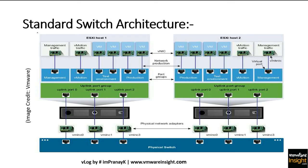Looking at the standard switch architecture: we have physical networking with physical switches connected to the VM NICs on the ESXi host, which connect to L2/L3 switches. On top of the ESXi host we create virtual machines with VNICs. We have different VLANs — management, vMotion, test environment, production — and different port groups connected to those VNICs. The uplinks on the ESXi host connect to the physical switches. This is the overall architecture of standard switch virtual networking.